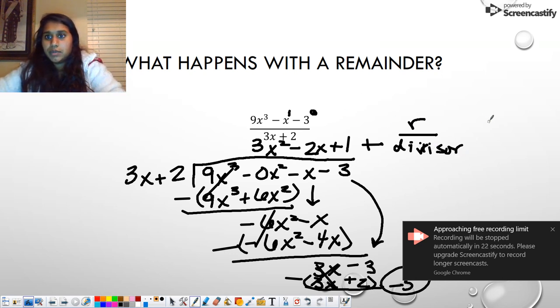So that becomes, instead of this, it would say minus 5 over 3x plus 2.